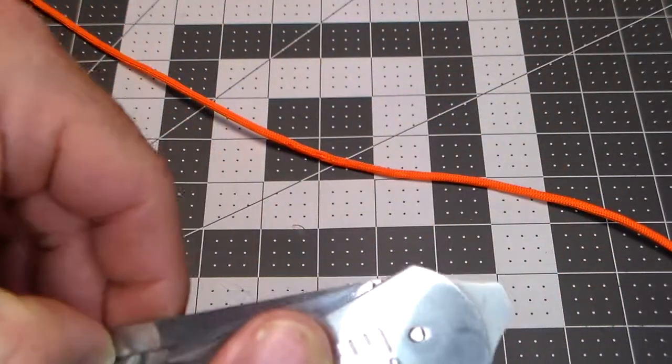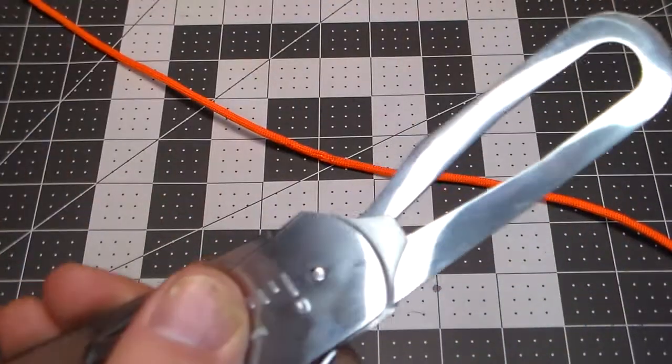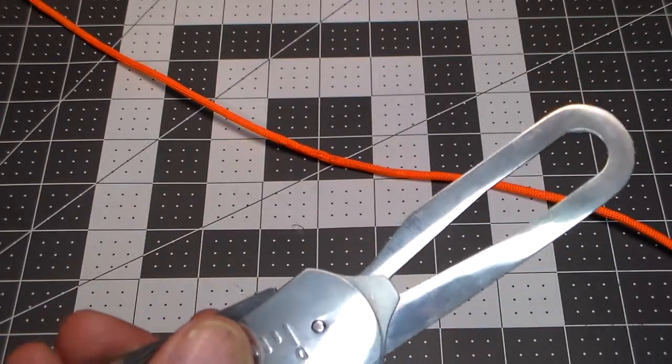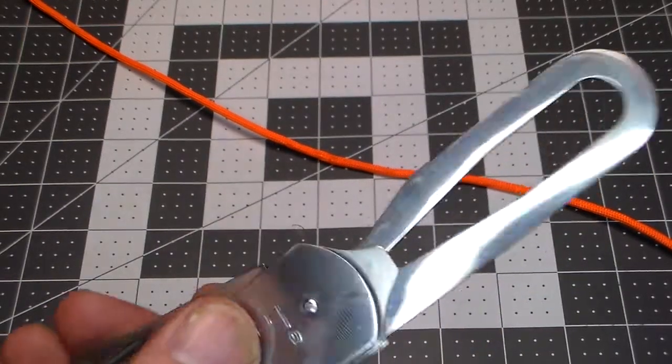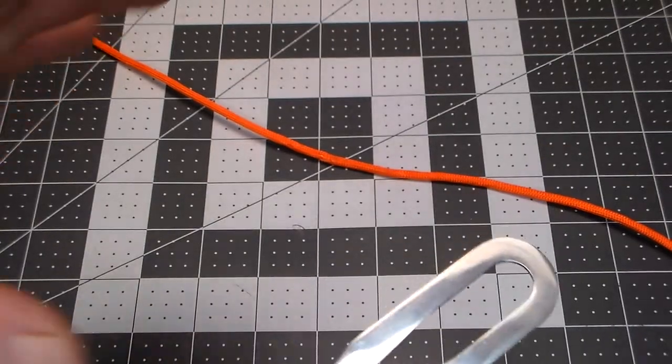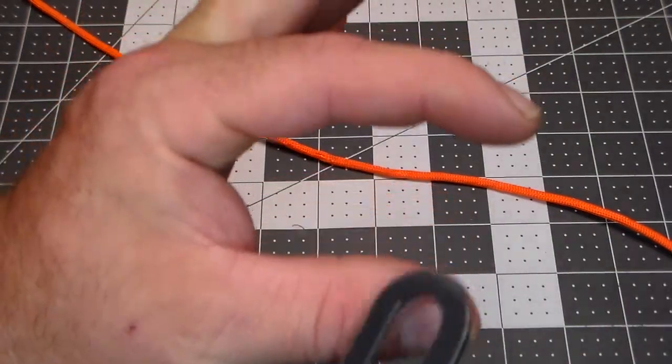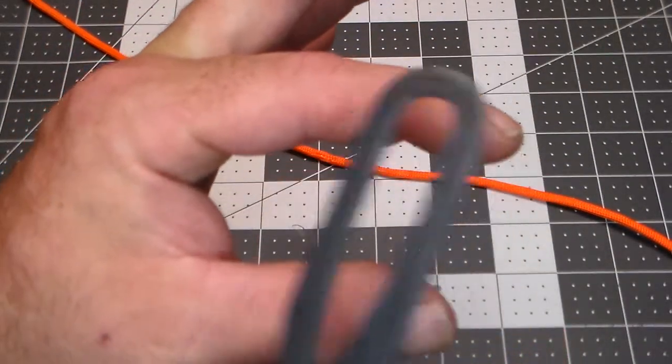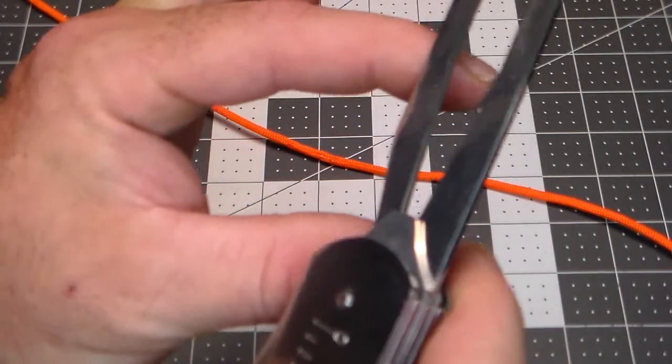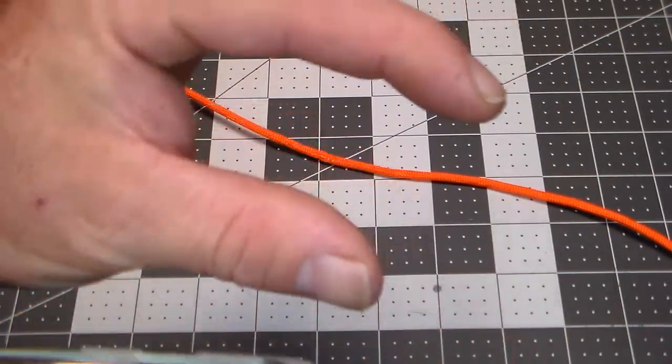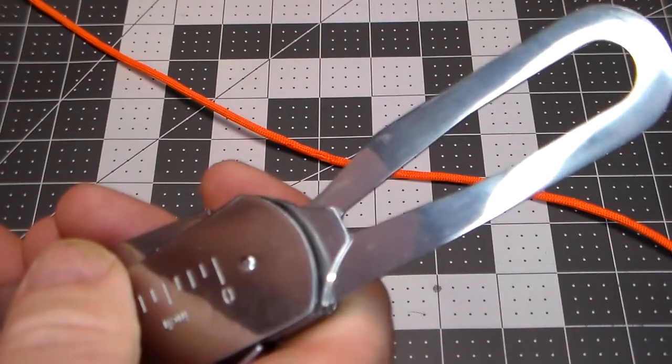Then we have a shackle key. If you're not into sailing or anything like that, but maybe you're into off-roading, you know what a shackle is. A shackle is usually a u-shaped piece of steel. It has this bolt, this threaded type bolt mechanism that goes through it, and this shackle key goes on the end of that bolt to tighten it. That's a shackle key, that's what it's used for.